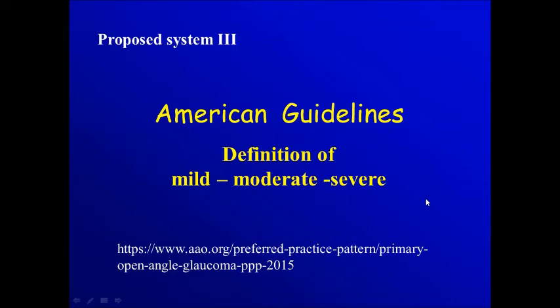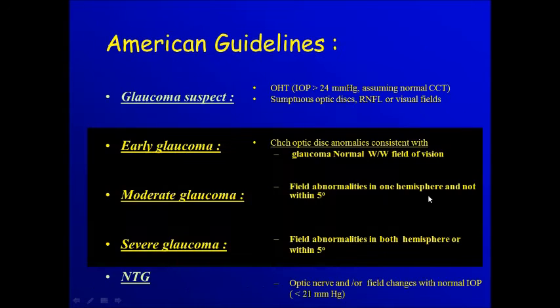The American guidelines define mild, moderate, and severe depending on early glaucoma, where we have characteristic changes of the disc with normal white-on-white field.